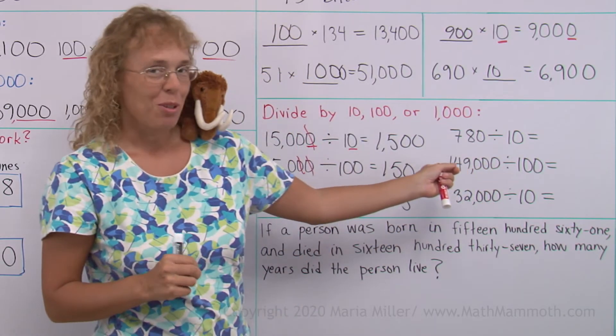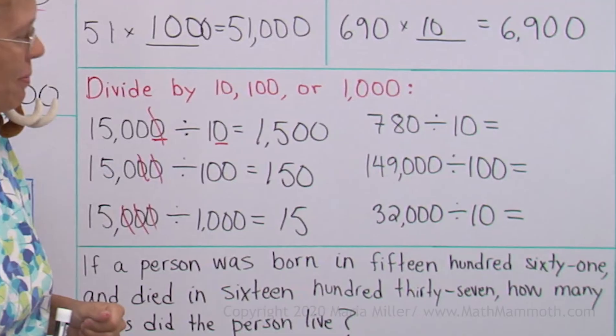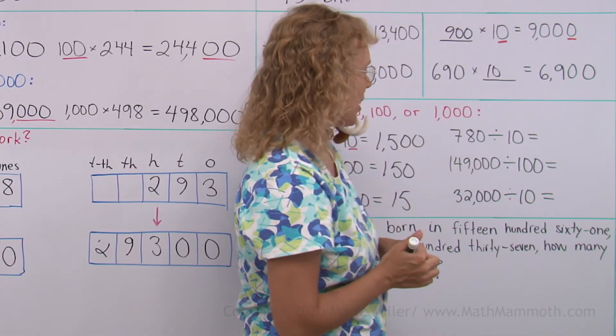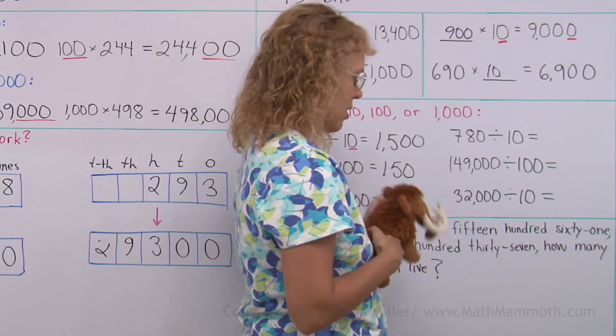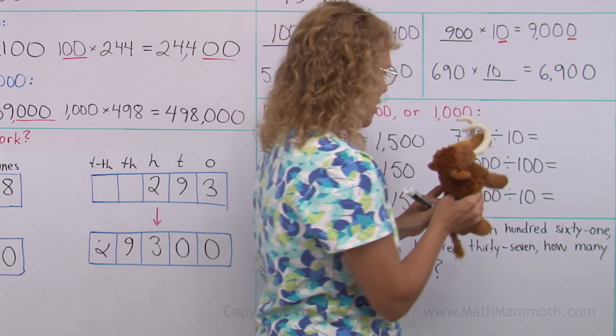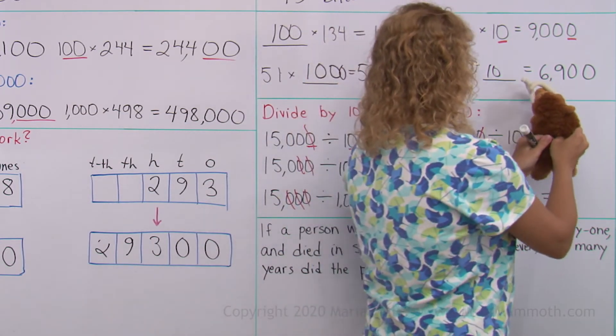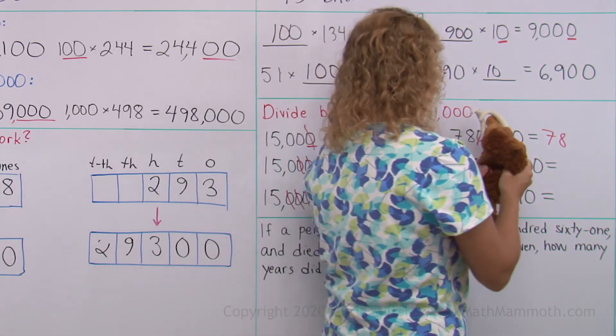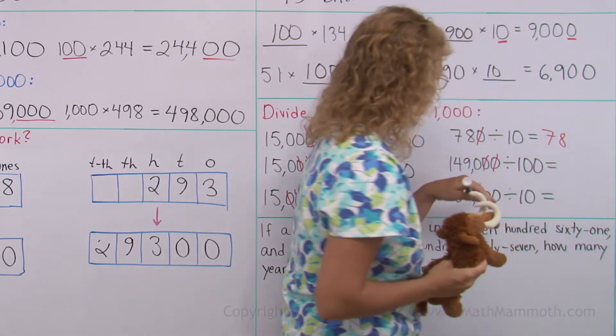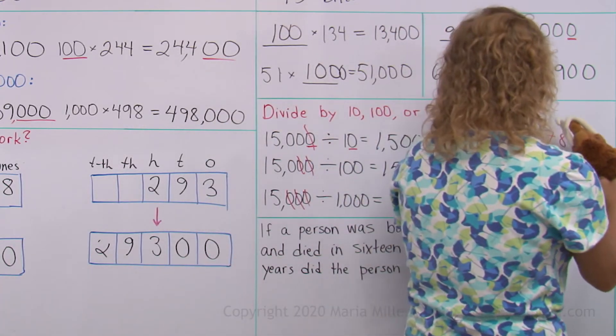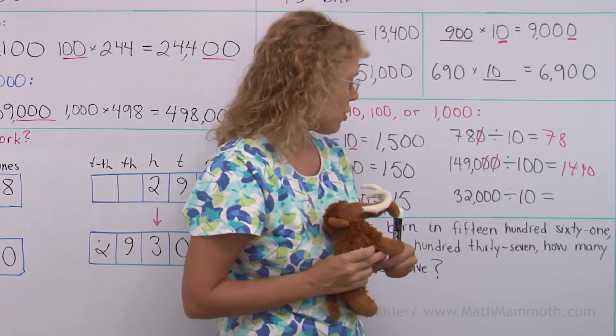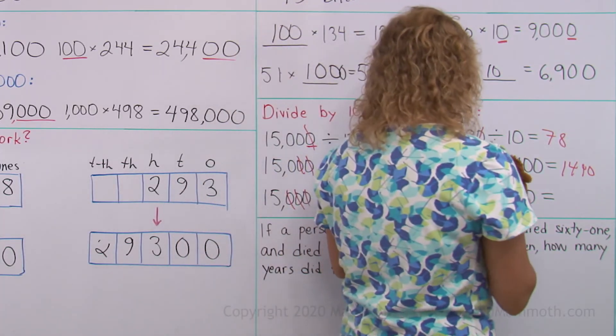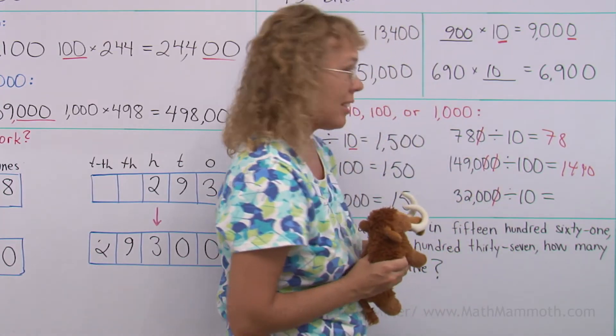Now you try this on your own, okay? Pause the video. 780 divided by 10. Oh, okay. Matthew, you want to? All right. You want to scratch off those zeros, right? It's kind of funny scratching off zeros. 149,000 divided by 100. Yep. That's how it goes. You scratch off two zeros. And then 32,000 divided by 10. Be careful. Aha. Yes. Exactly. Just scratch off one zero.